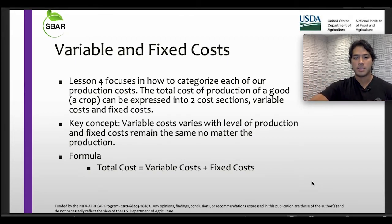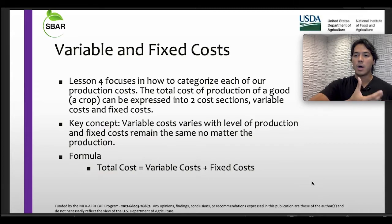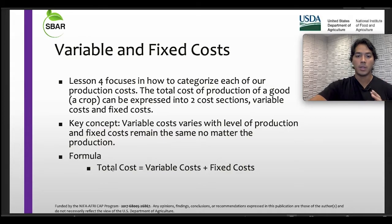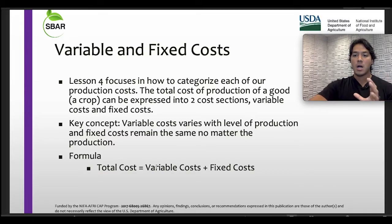Here are the key concepts. We have variable costs, which vary with the level of production. On the other hand, we have fixed costs, which remain the same no matter the production. The formula will be the following: total cost equals variable cost plus fixed cost.